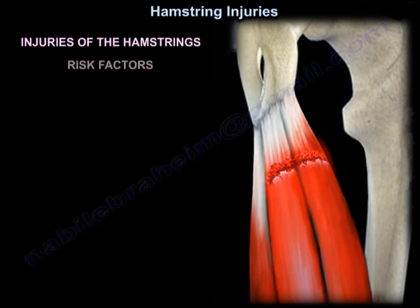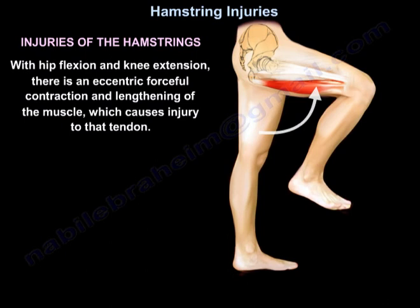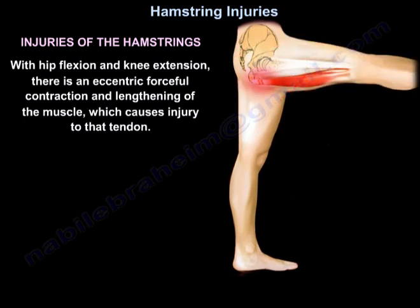Risk factors for hamstring injuries include previous hamstring injury, which may cause healing by weak scar tissue susceptible to re-injury; tighter hamstrings, shorter leg, and leg length discrepancy; decreased hip extension; severe imbalance between quadriceps and hamstring strength; and inadequate warm-up. With hip flexion and knee extension, there is an eccentric forceful contraction and lengthening of the muscle, which causes injury to the tendon.